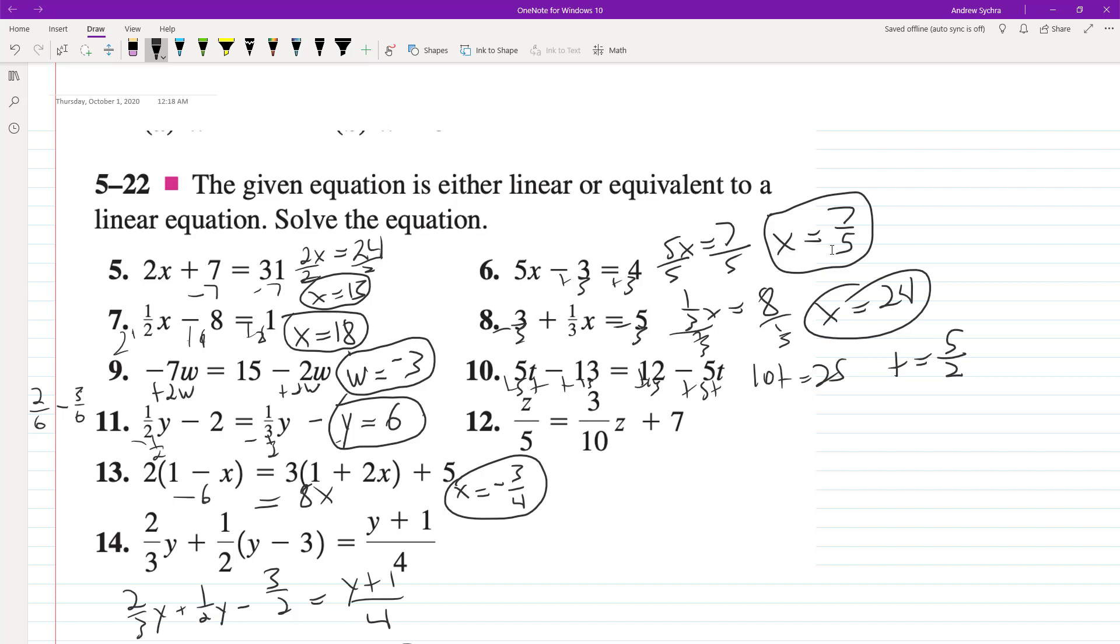Common denominator of 10, so we end up with 2z equals 3z plus 70. Subtract 3z from the 2z. Negative z equals 70. Divide by negative 1, z equals negative 70.